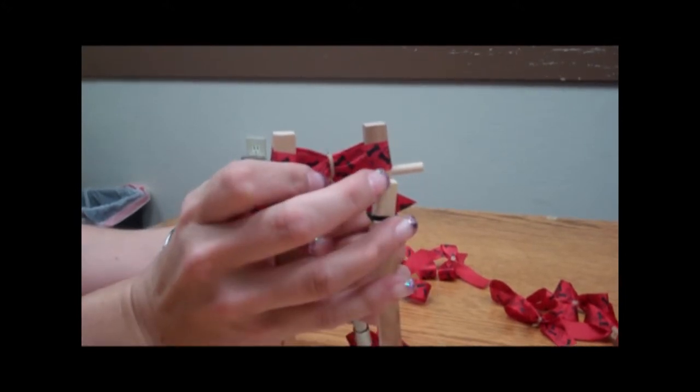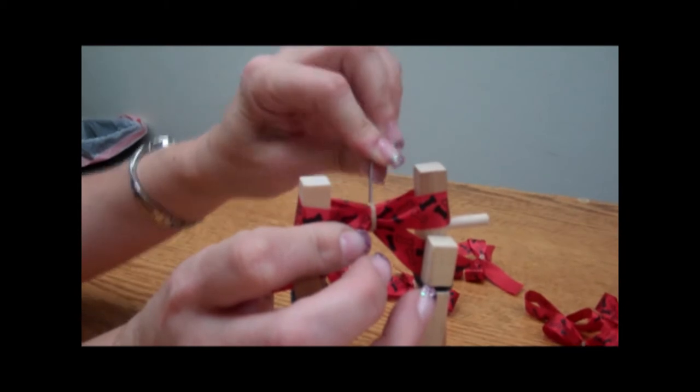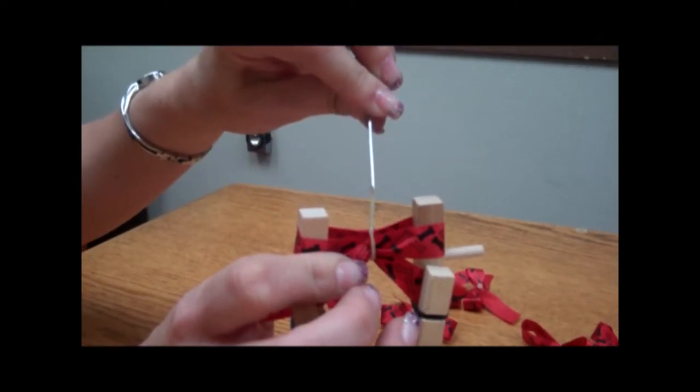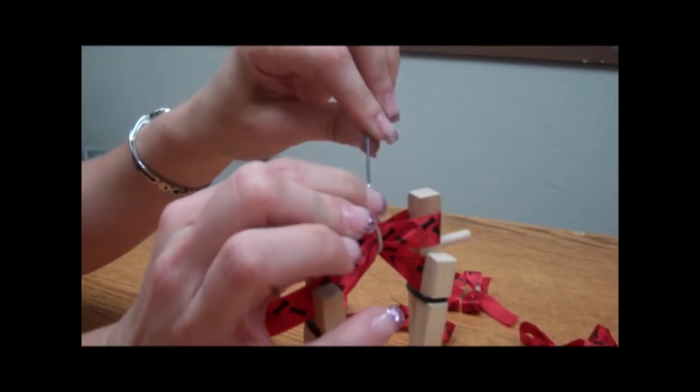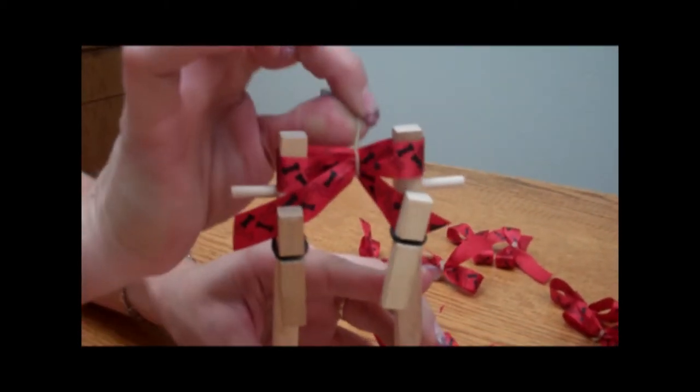Then we're gonna pull it, turning the tool slightly so that it goes through the rubber band. Then at this point you can take it into your fingers and tighten it down.